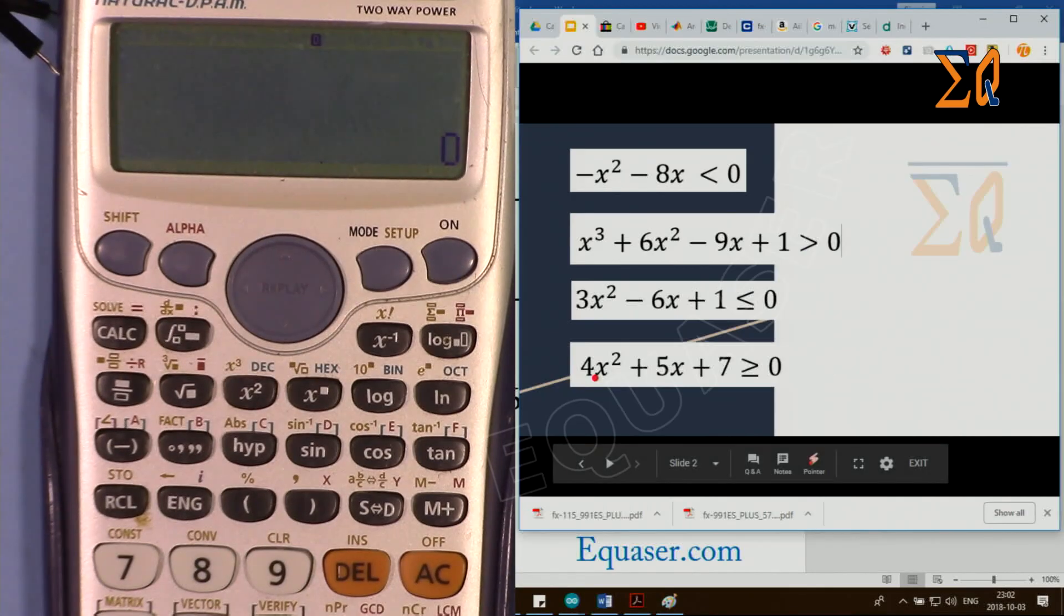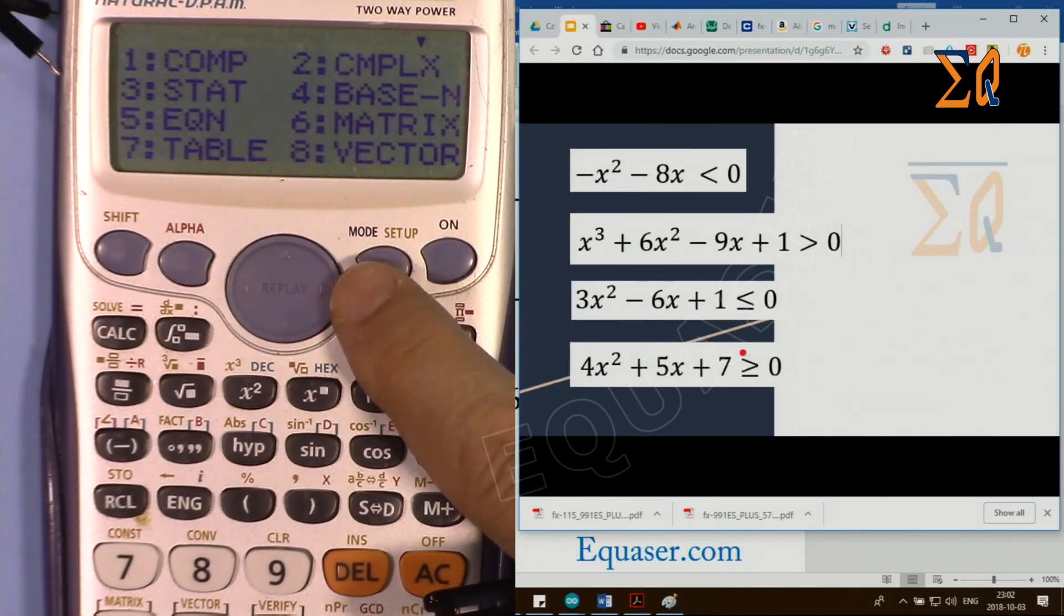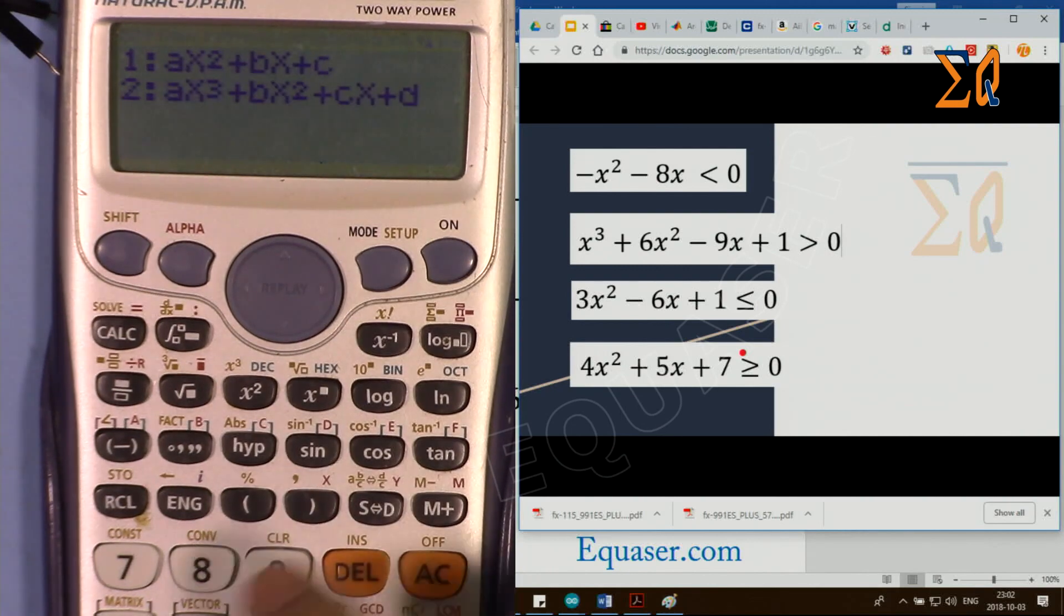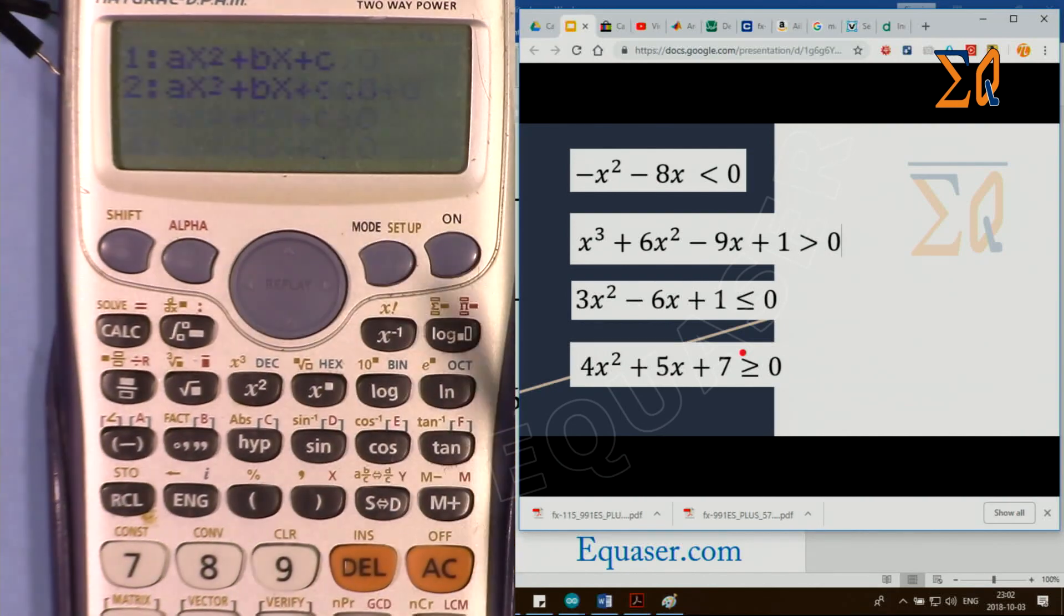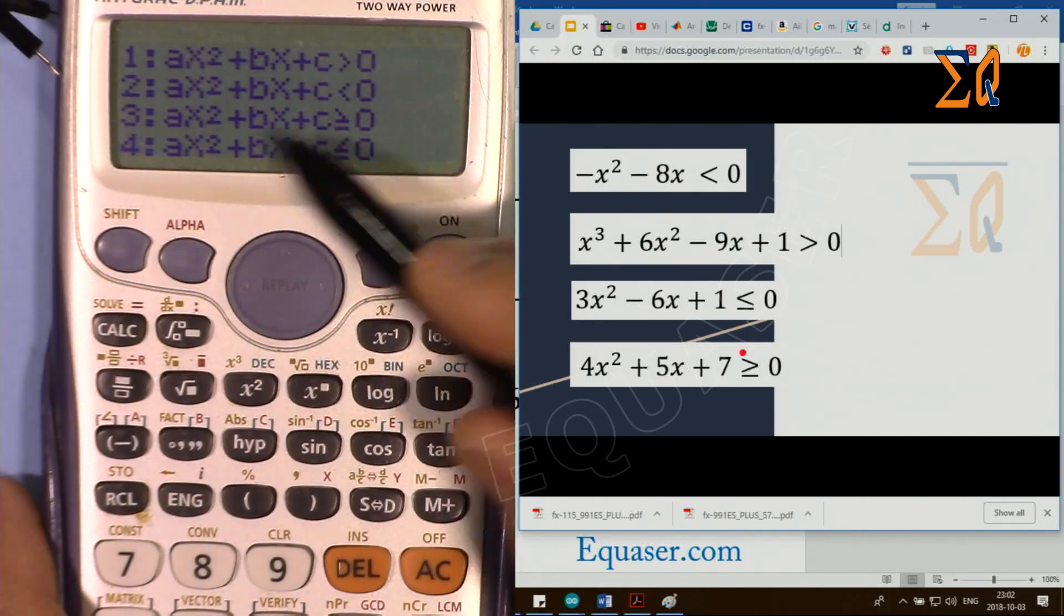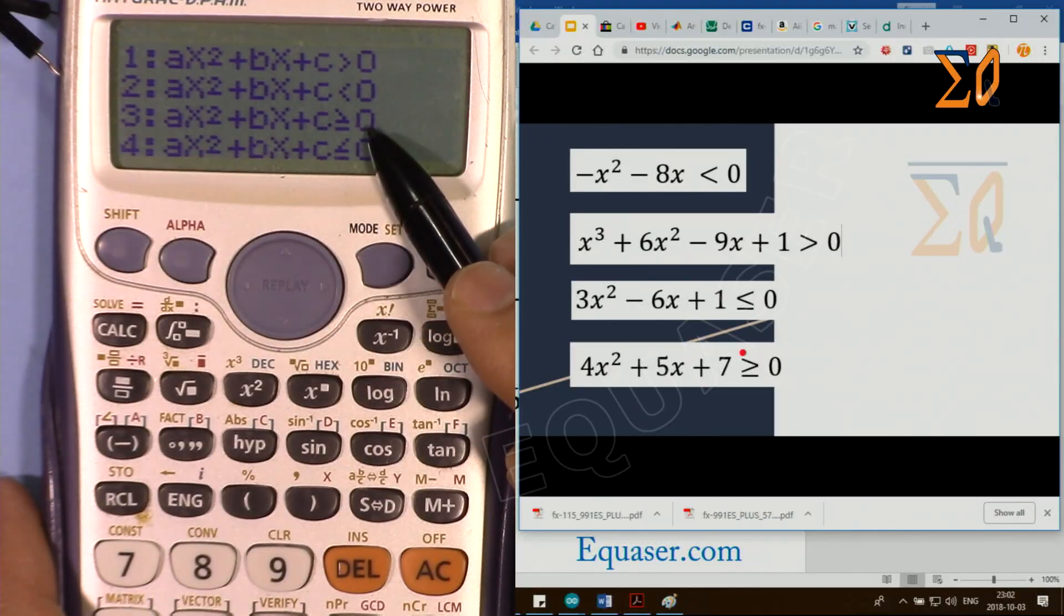Now let's do another example. This time it's 4x² + 5x + 7, equal or greater than 0. Now press mode again and go down and then 1, and again select 1. This time we are selecting 3 because equal or greater than 0.